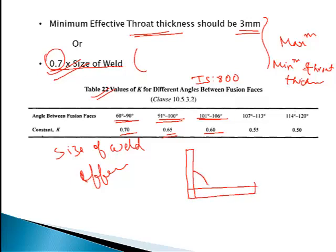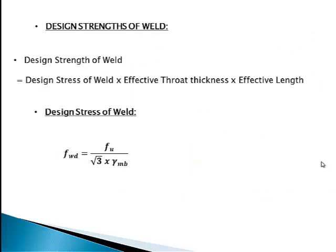The face is here, the toe is here. The whole diagonal distance is the throat thickness, but the perpendicular drawn to the root is the effective throat thickness — that is what I mainly use for design purposes. Design strength of weld equals stress into area, and area equals effective throat thickness into length of weld.